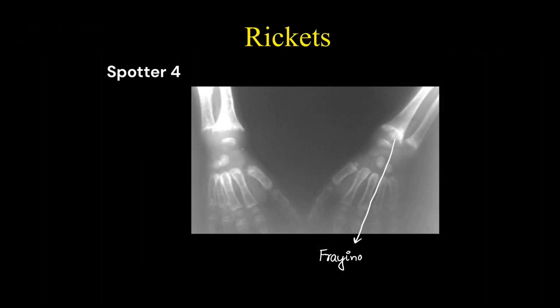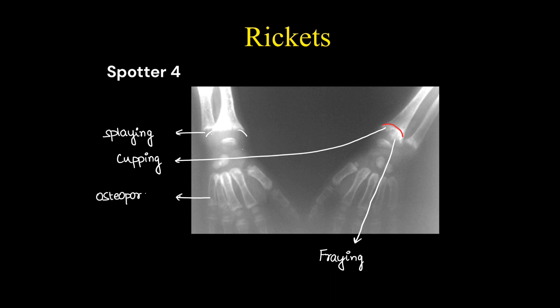This is a case of rickets. Here you can see fraying, that is brush-like appearance, splaying, widening of metaphysis, cupping, and osteoporosis.